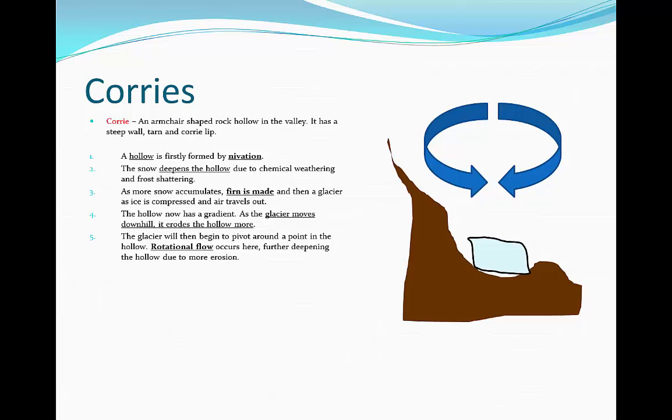As you can see by the diagram, we now have a circular part in our hollow. The glacier, as it moves down, is stuck around a centre of gravity in one of these points in the hollow. So as it moves down, it begins to rotate and this is going to deepen the hollow and erode it even more at a very fast rate.